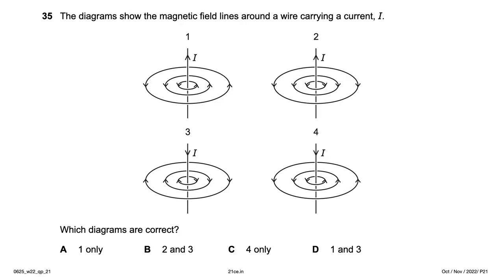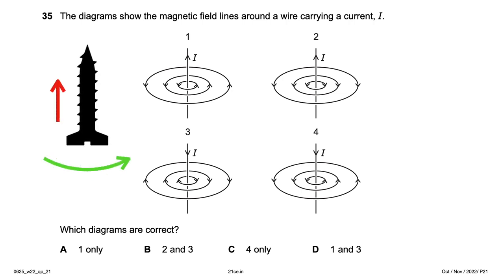The diagram shows magnetic field lines around a wire carrying current. Using the right-hand thumb rule (or screw rule): the green arrow shows the direction of rotation of field lines and the red arrow the direction of current flow. Diagrams 1 and 3 are correct — option D.